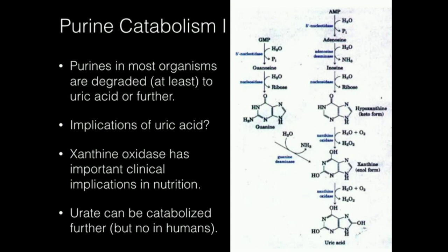Xanthine is going to react with xanthine oxidase to give uric acid. Xanthine oxidase plays a major role in nutrition, particularly because it produces hydrogen peroxide, which is a pro-radical — it can form free radicals given the right environment. Uric acid and urate are used interchangeably; they basically refer to the same thing, differing only by a proton. Uric acid cannot be metabolized any further in humans, and depending on diet, that can lead to conditions like gout, which we'll cover in another video.